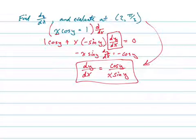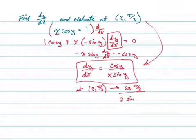So that point would be at (2, π/3), that equals the cosine of π/3 all over 2 times the sine of π/3.